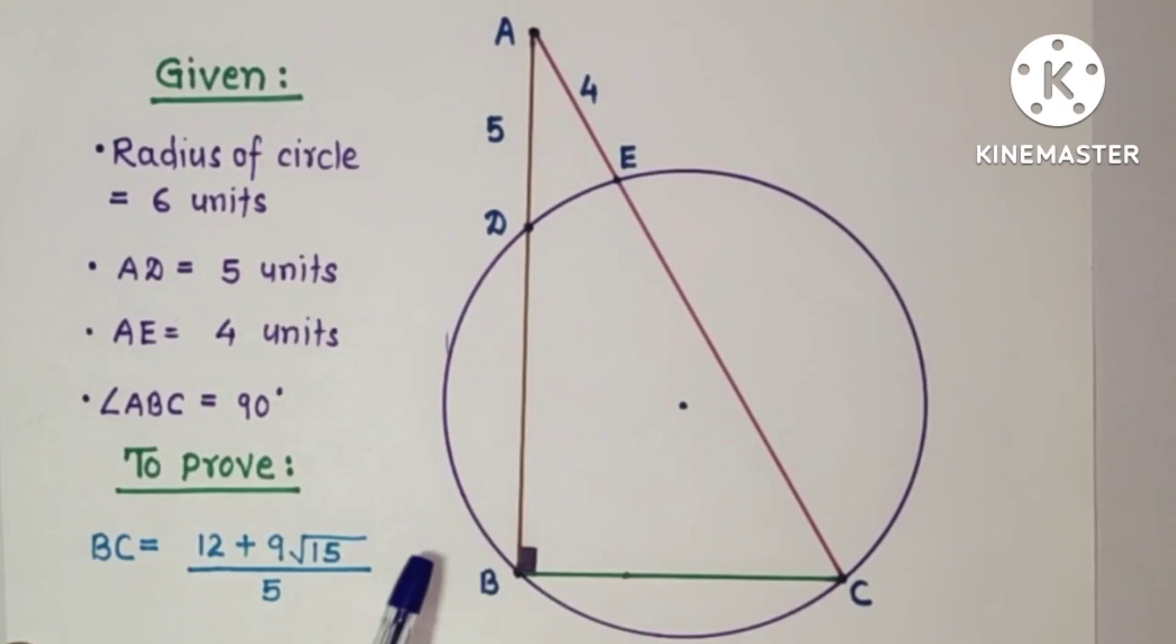Triangle ABC is a right-angled triangle, right-angled at B. We have to prove that the length of BC is equal to 12 plus 9 root 15 by 5.